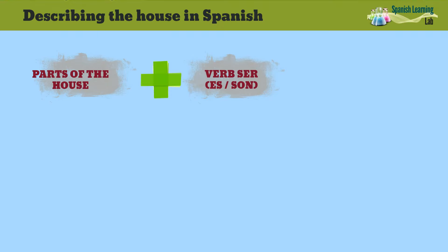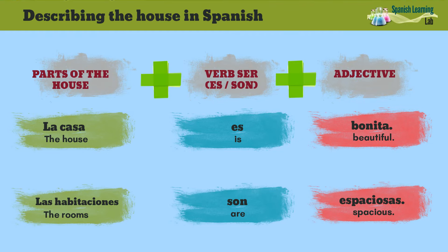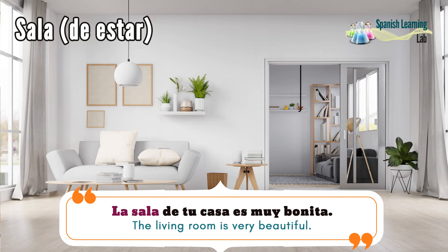Describing rooms and parts of the house in Spanish. In order to describe the house in Spanish, say the parts of the house, then add the verb ser. And last, add an adjective like bonito, elegante, espacioso, and so on. For example, las habitaciones son espaciosas. Remember that ser is an irregular verb, so it will be conjugated as es for one thing and son for many. Pay attention to the following group of sentences.